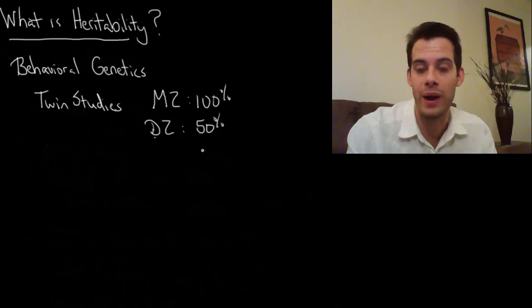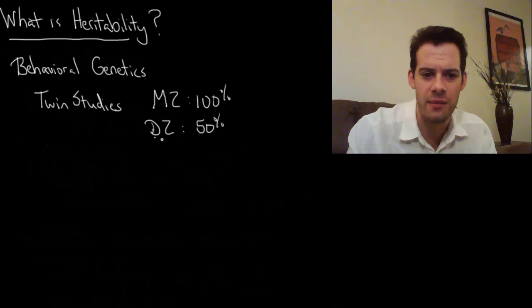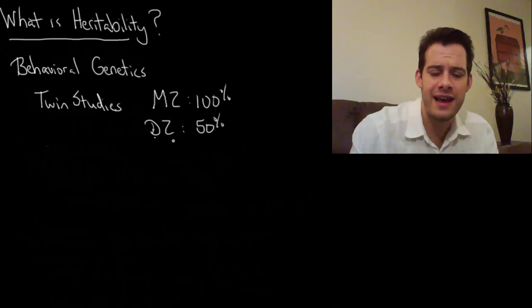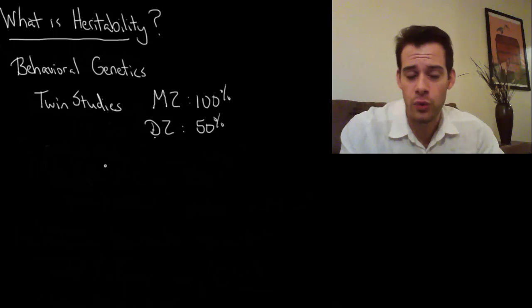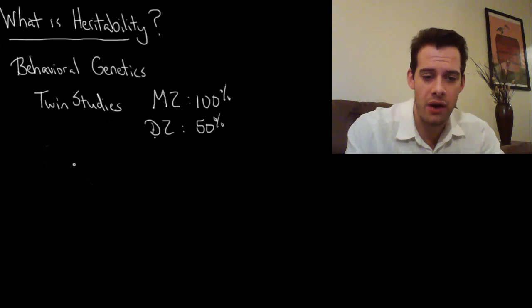And we want to try to control for that. Using dizygotic twins is a way to do that. It makes the assumption that dizygotic twins raised in the same house will have more similar environments than siblings raised in the same house. So that's why they're preferable to studying just siblings. That's how twin studies are conducted—we compare monozygotic and dizygotic twins for a particular trait.